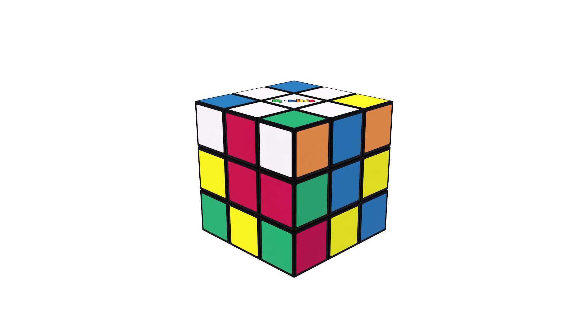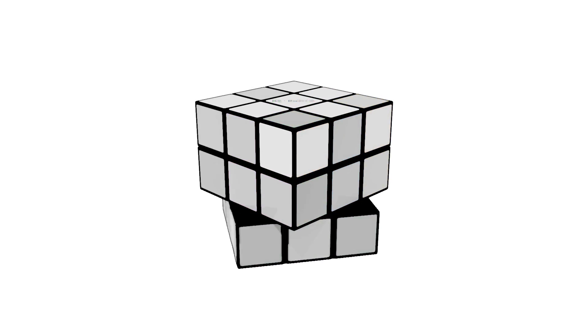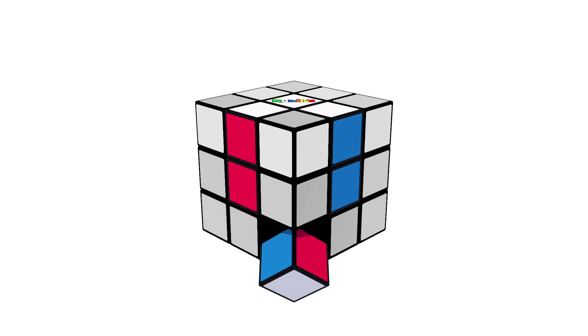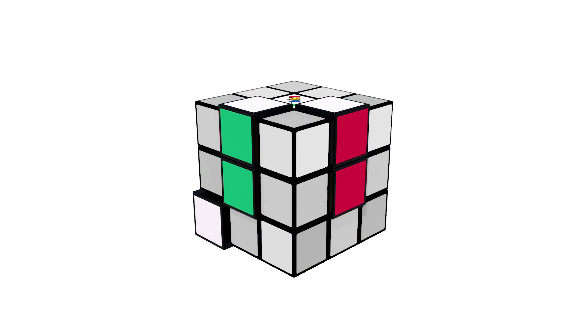So, once you know where it goes, position it directly underneath its final position. If the corner piece is already in the bottom layer, then simply rotate it till it's in the correct position, like this.